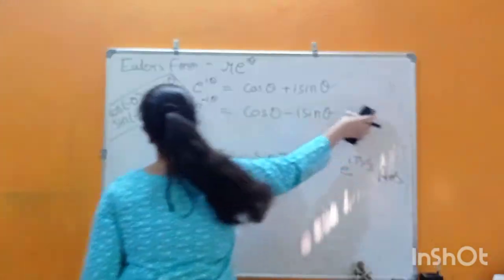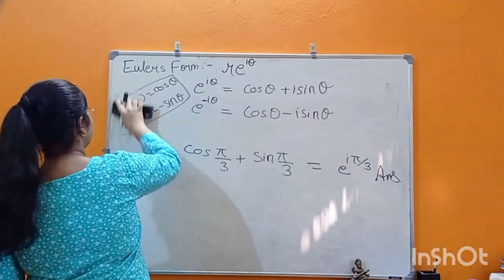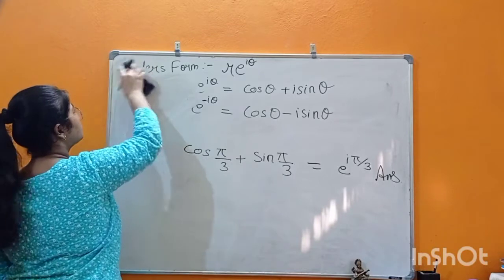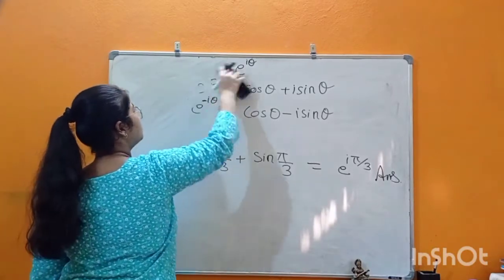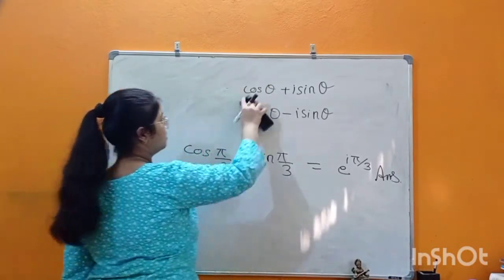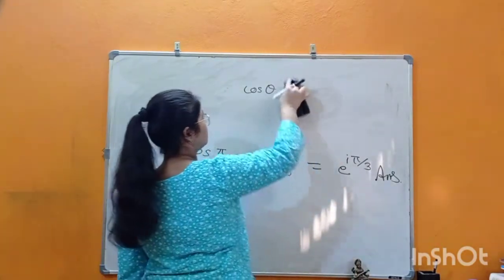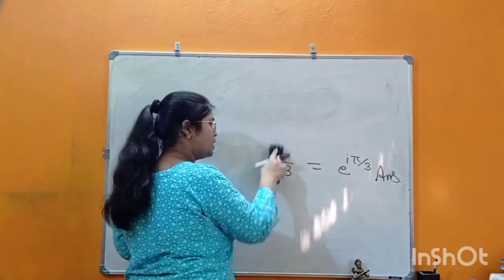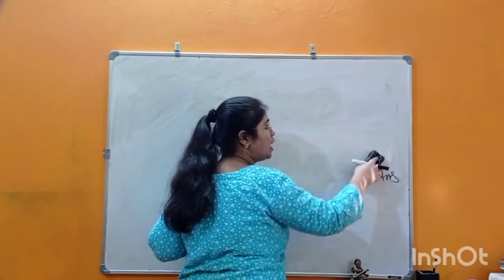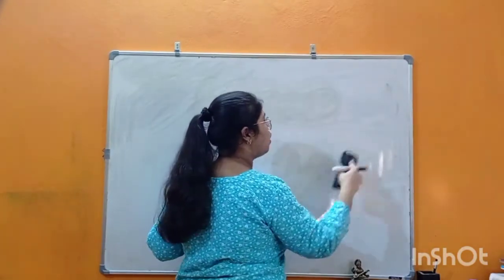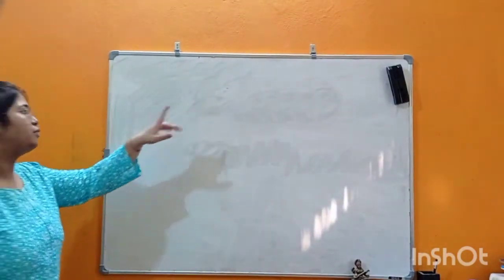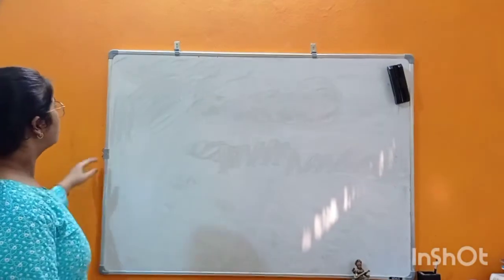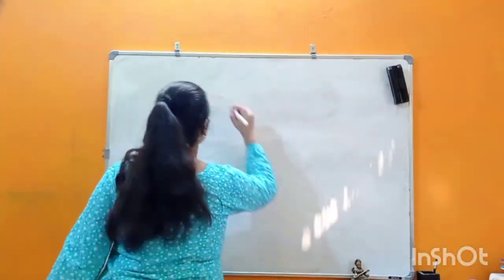After Euler's Form, we have DeMoivre's Law. What you always have to remember throughout all these forms of representation is your polar form — all other forms including DeMoivre's Law are derived from it. Let's now come to DeMoivre's Law.